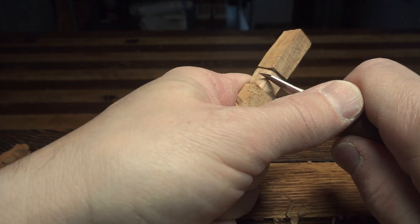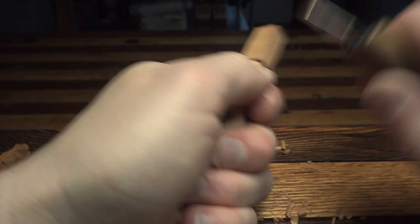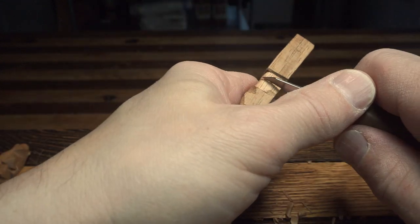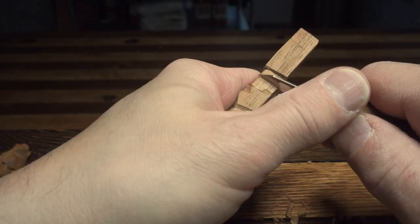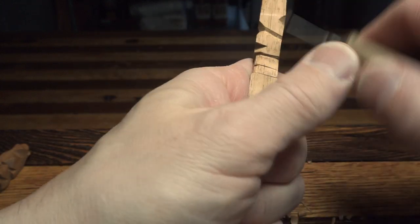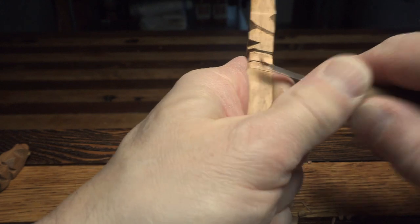Here we'll put the separation for the teeth. Again just going to be stop cuts right across. Separate the upper and lower teeth. We'll cut up a little bit from the bottom. Have the bottom teeth slightly behind the upper teeth.